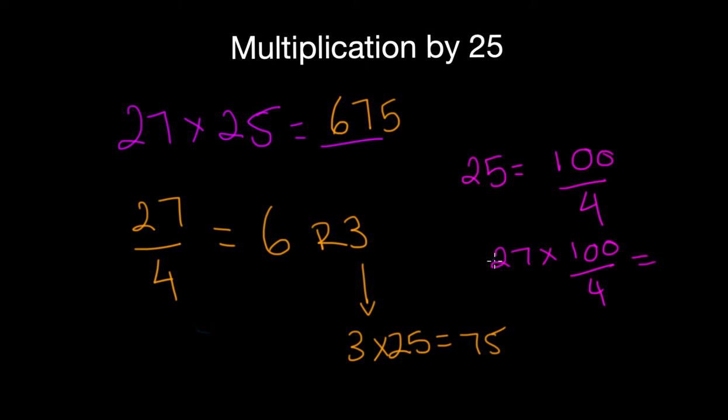So the way you could do it is say 27 by 4 is equal to 6.75. You multiply that by 100, and you get 675. So that's why this trick works.